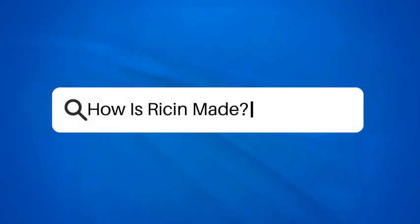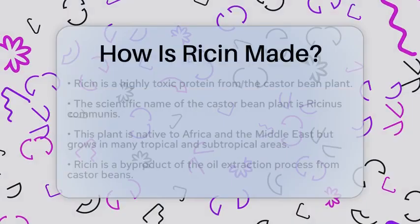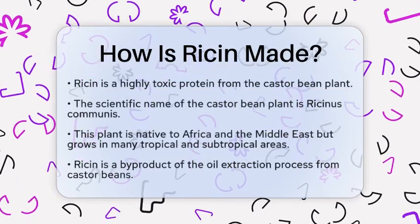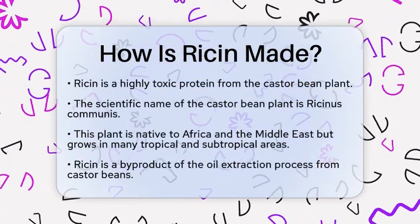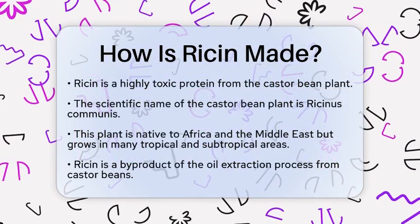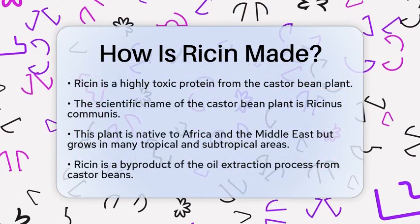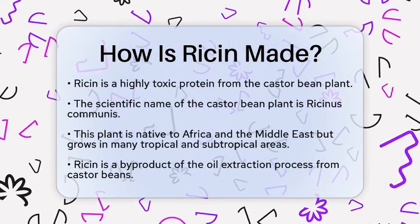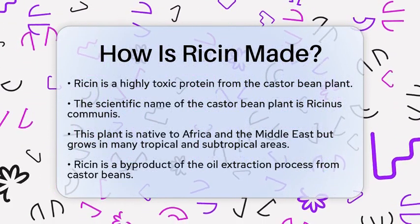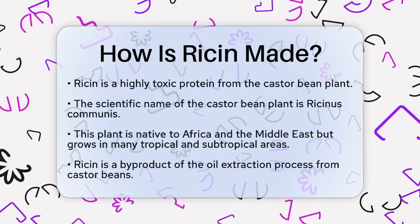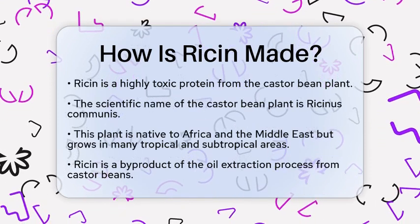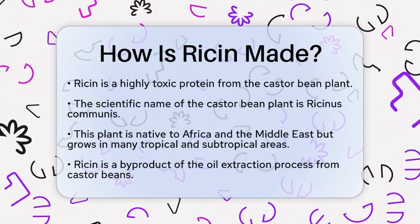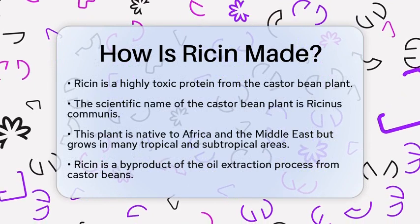How is ricin made? Imagine a substance so potent that just a tiny amount can be lethal. This is the reality of ricin, a highly toxic protein derived from the castor bean plant. Today, we will explore how ricin is produced, but first, let's understand where it comes from.